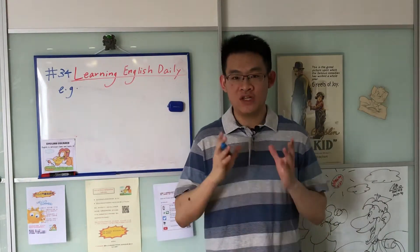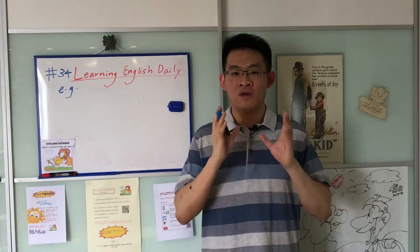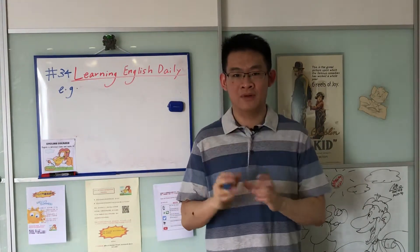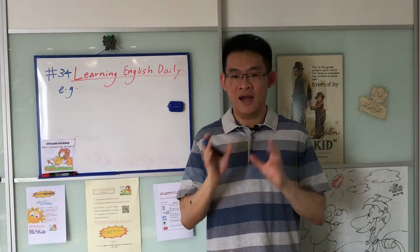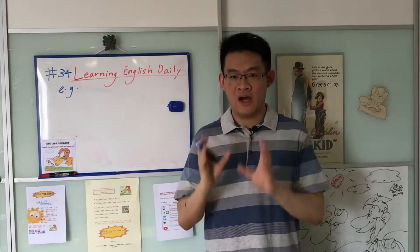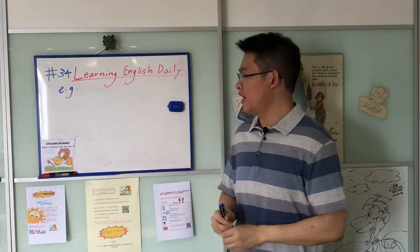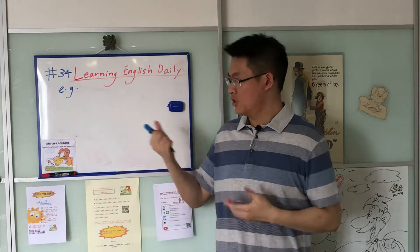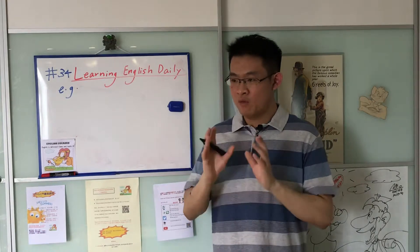What does e.g. mean? E.g. is the abbreviated form of 'for example.' For example, there are a lot of scientists that I like — e.g. Isaac Newton, Albert Einstein, Richard Feynman.